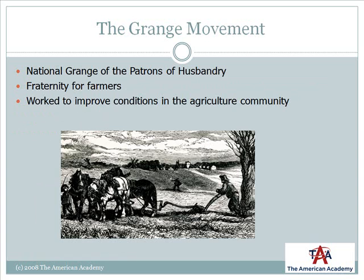Founded in 1867, the National Grange of the Patrons of Husbandry was a fraternity-type organization designed to help farmers in America. The Grange eventually became a political party that fought for the rights of farmers and the needs of the agricultural community.